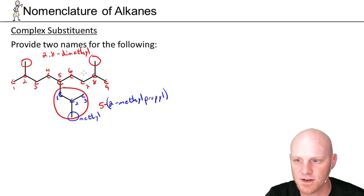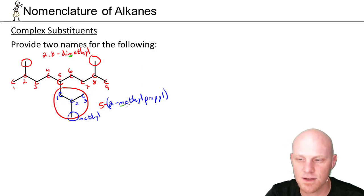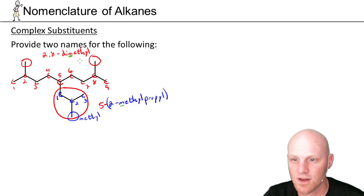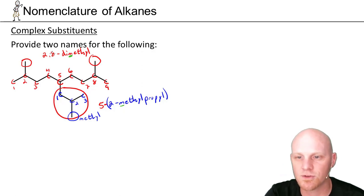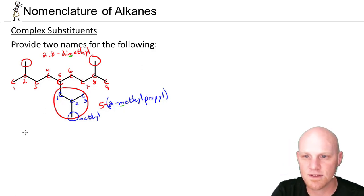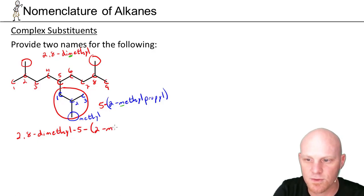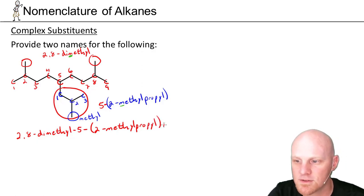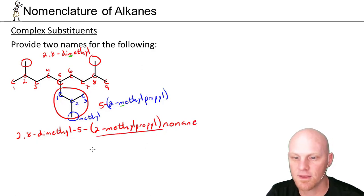Now for the alphabetical ordering: methyl is alphabetized under 'M' for the dimethyl groups — we don't include the 'di' for alphabetization. For the complex substituent named systematically, the first letter is also 'M' for methyl. Since both start with 'methyl,' but the complex substituent continues with 'propyl' while the simple methyl stops, the simple methyl actually comes earlier in the alphabet. So the full systematic name is 2,8-dimethyl-5-(2-methylpropyl)nonane, with the 9-carbon parent chain being nonane.